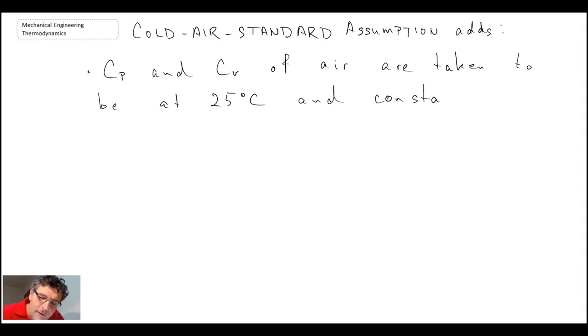What the cold air standard assumption means is we assume something about the specific heats, and that is that CP and CV of air are taken to be at 25 degrees Celsius and constant. If you cannot invoke this cold air standard assumption, what you will need to do is you will need to account for variable specific heats. Typically, the temperature differential in any of these engines is going to be more than 200 degrees Celsius. Consequently, you need to use the tables in the back of the book when you're solving any of the engines, so the internal combustion or even the external combustion problems.